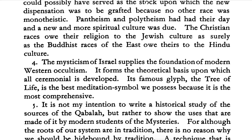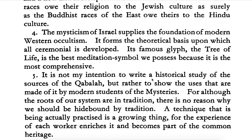The Christian races owe their religion to the Jewish culture, as surely as the Buddhist races of the East owe theirs to the Hindu culture. The mysticism of Israel supplies the foundation of modern Western occultism, of course. It forms the theoretical basis upon which all ceremonial is developed. Its famous glyph, the Tree of Life, is the best meditation symbol we possess because it is the most comprehensive. I think that is the symbol we saw on the cover of the book, and I'm sure it'll come up again soon.